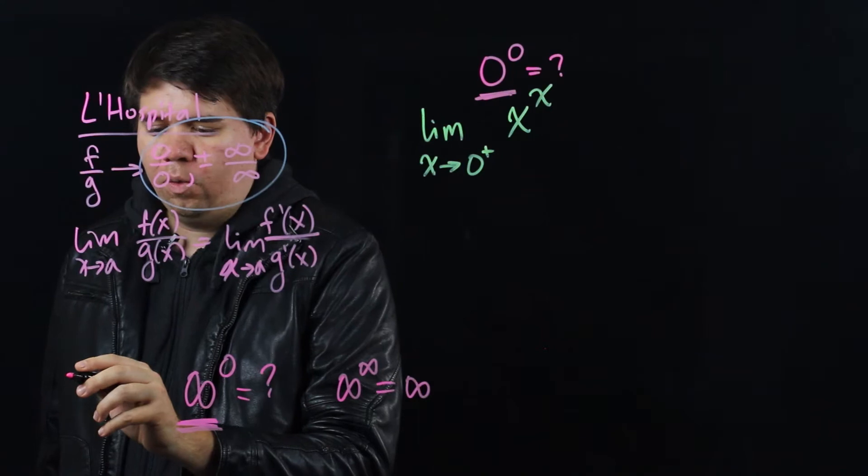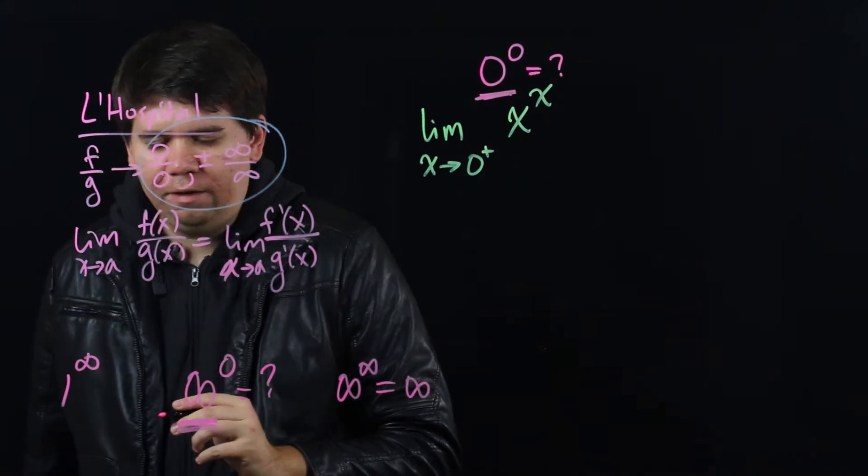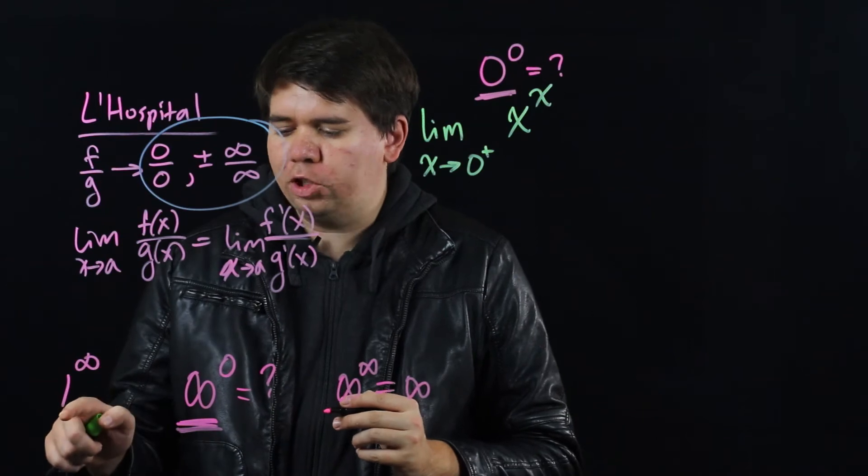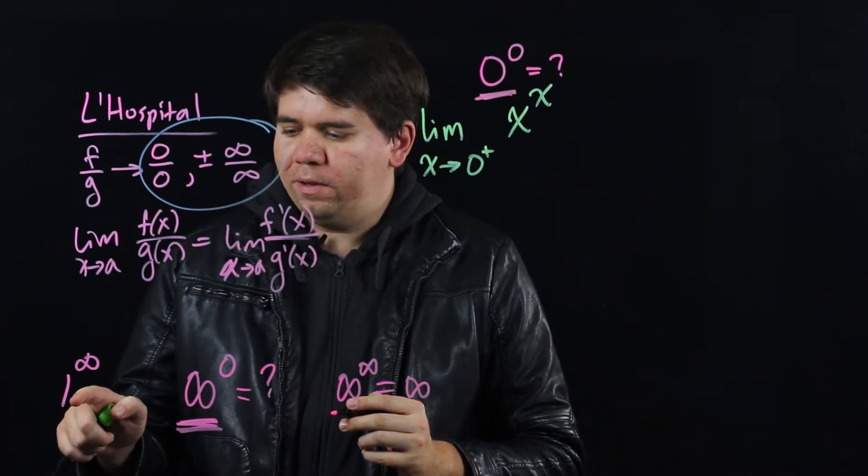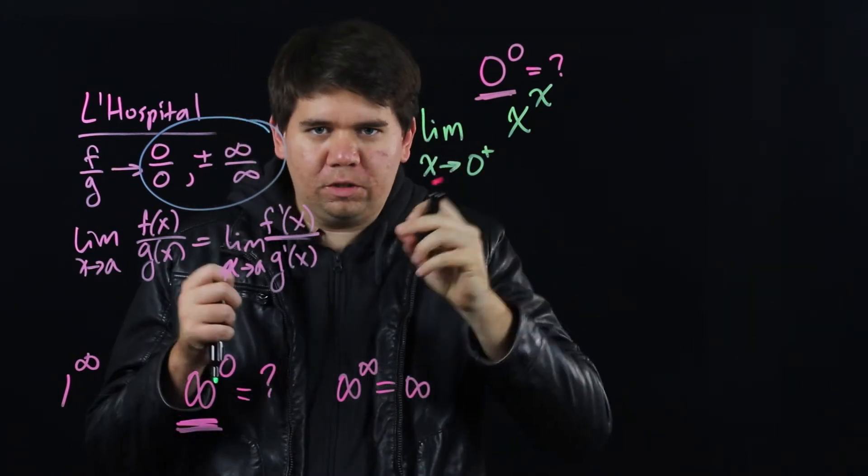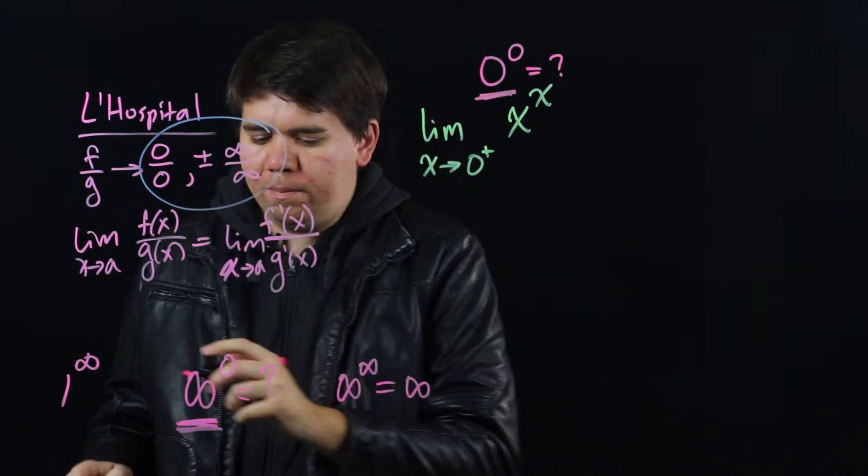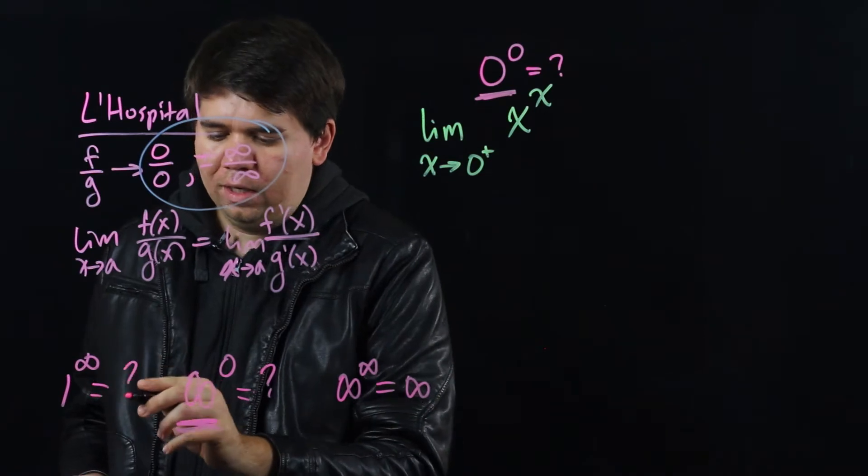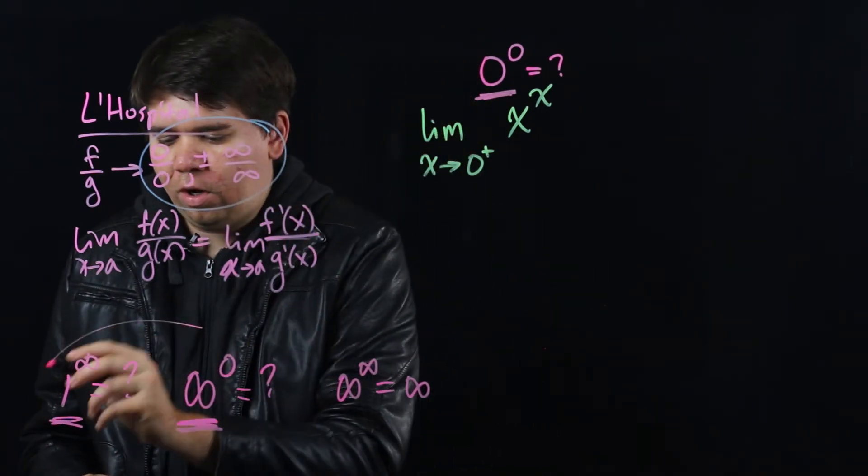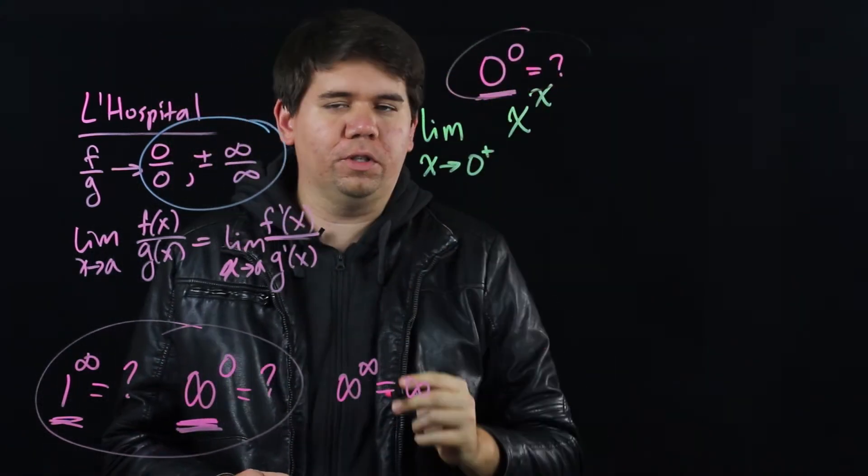There's one more. If you have 1 to the infinity. It's not clear where it should land. 1 to any power should be 1. But if you have something to the infinity of power it should be going off to infinity. Or if it's a small number it should be going off to 0. So there's a fundamental competition between these. So this one is also not clear. So these we call indeterminate forms. These are all indeterminate forms.